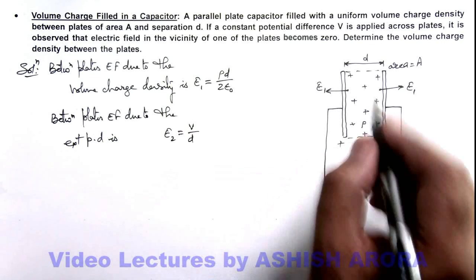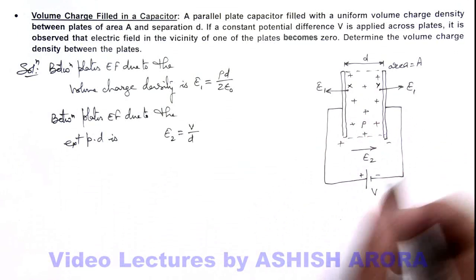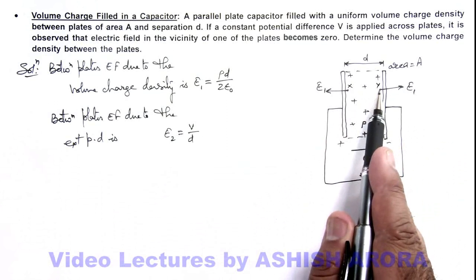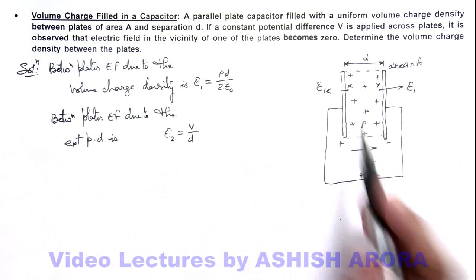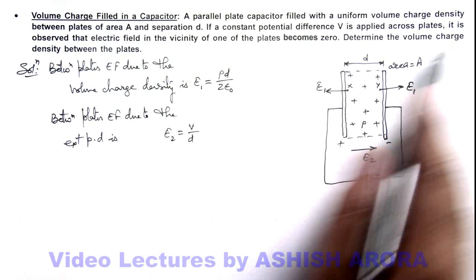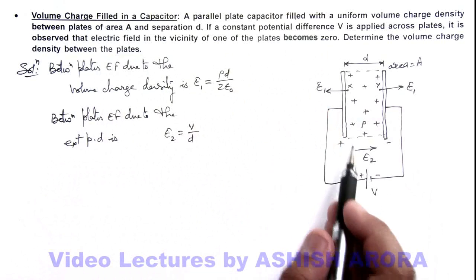If we consider two points—one is this X and the other is this Y—we can see E₂ and E₁ will be added up at point Y. At point X, E₁ and E₂ are in opposite directions. The problem states that the electric field in the vicinity of one of the plates is zero. It could only be at point X.